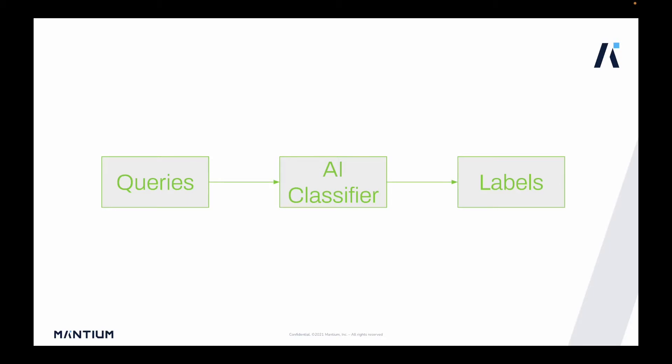For example, when someone sends a request to bank customer service saying 'I cannot use my card to make payment,' the AI classifier would classify that as a payment issue. The customer service operator works with that label — such as 'payment issue' or 'card issues.' You can also integrate this with other applications like Zendesk or any other platform.